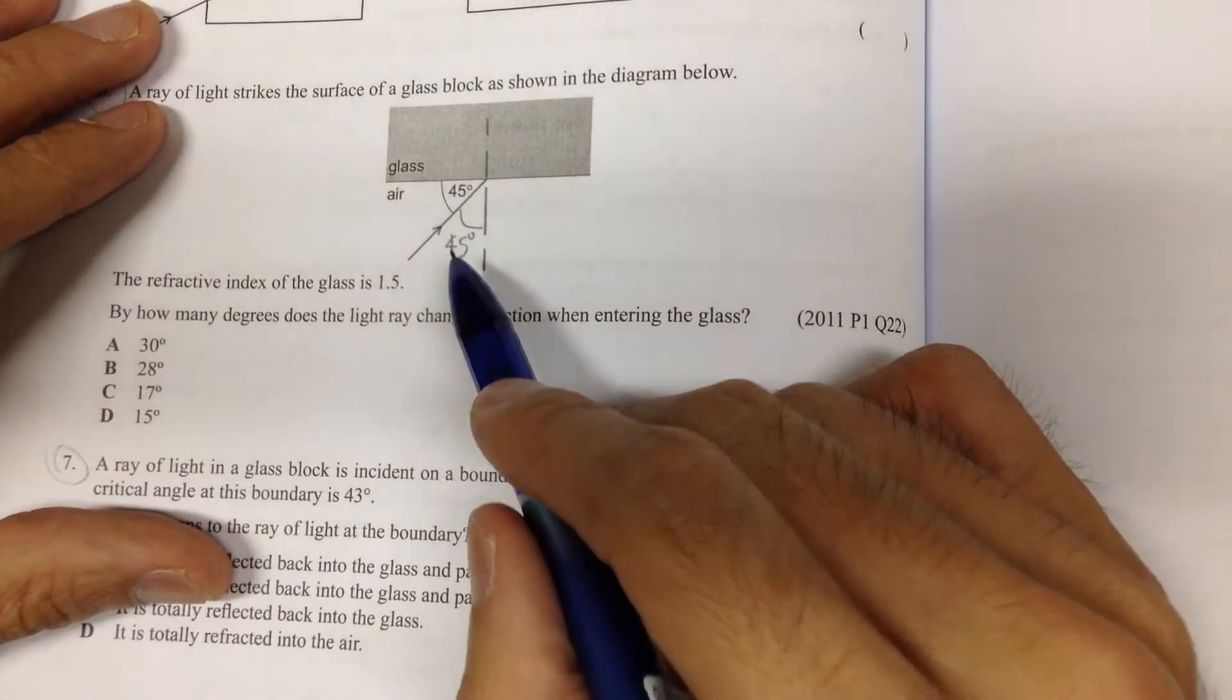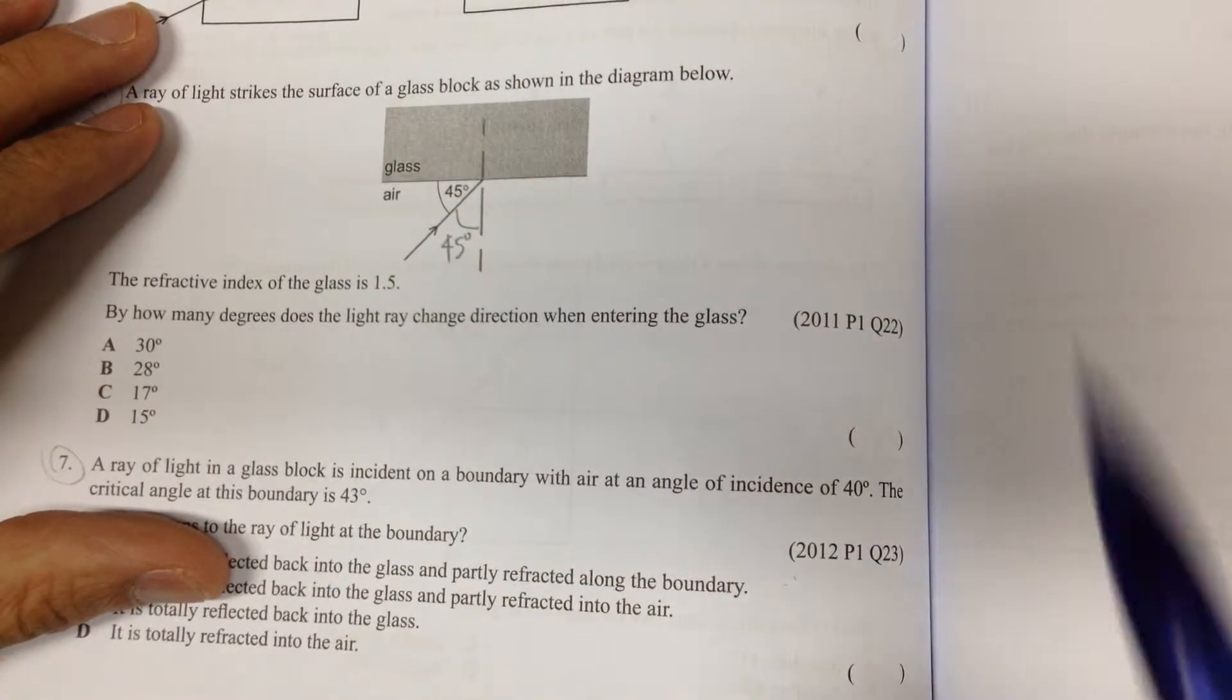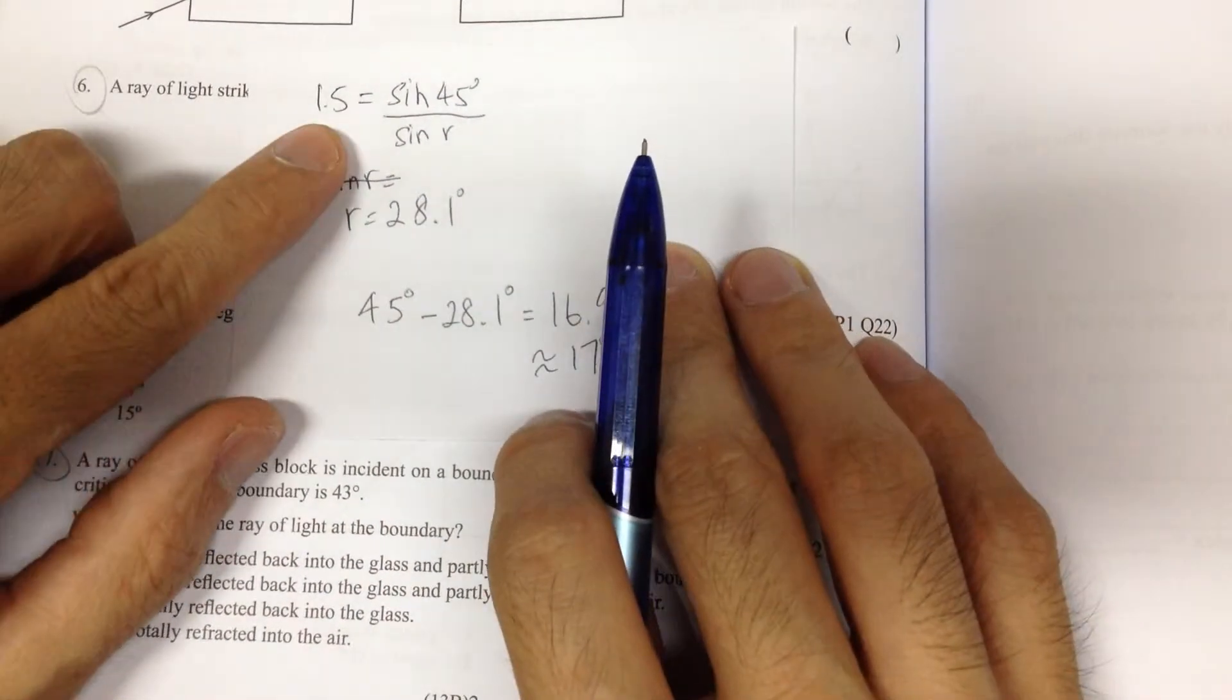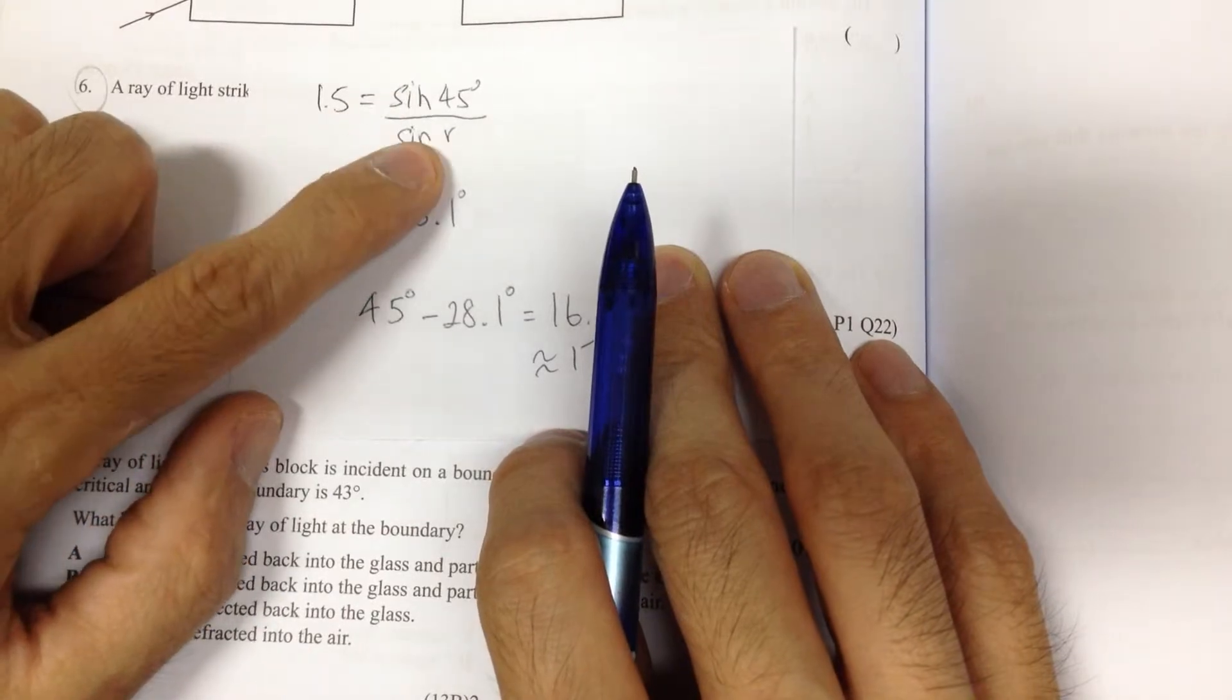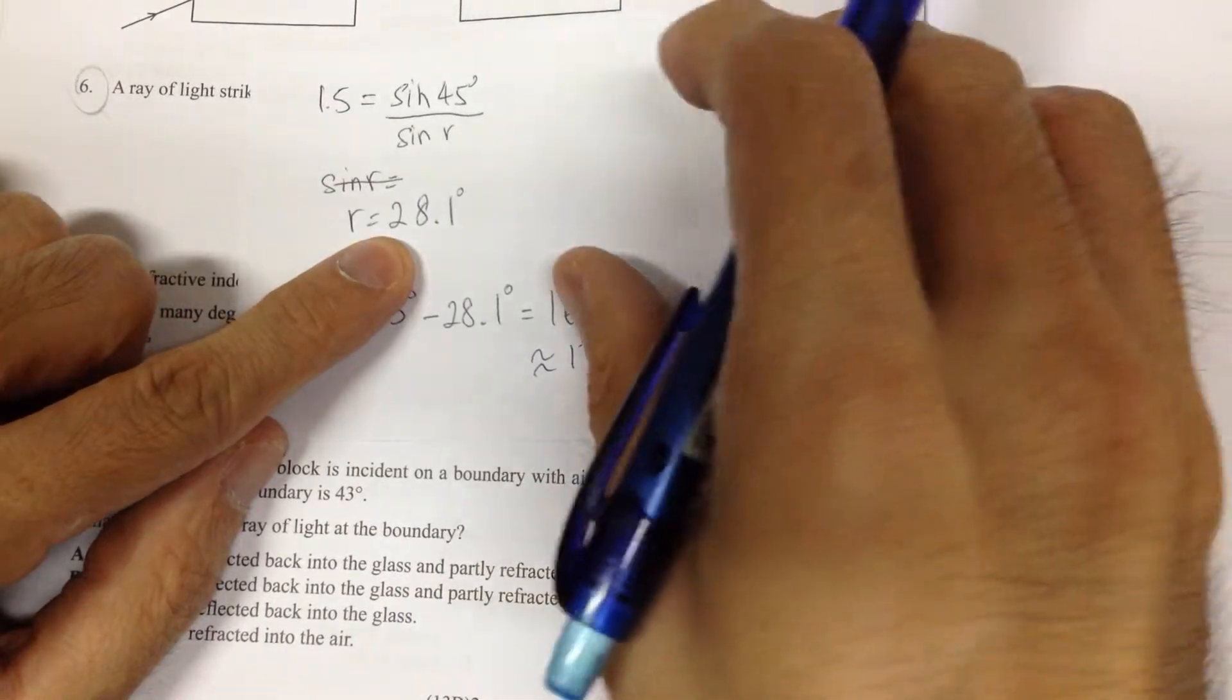So, so the first thing you know that this is the angle of incident. Then, the second thing is that we sub the formula, refractive index equal to sine i over sine r. So, from there, we work out the angle to be 28.1 degrees.